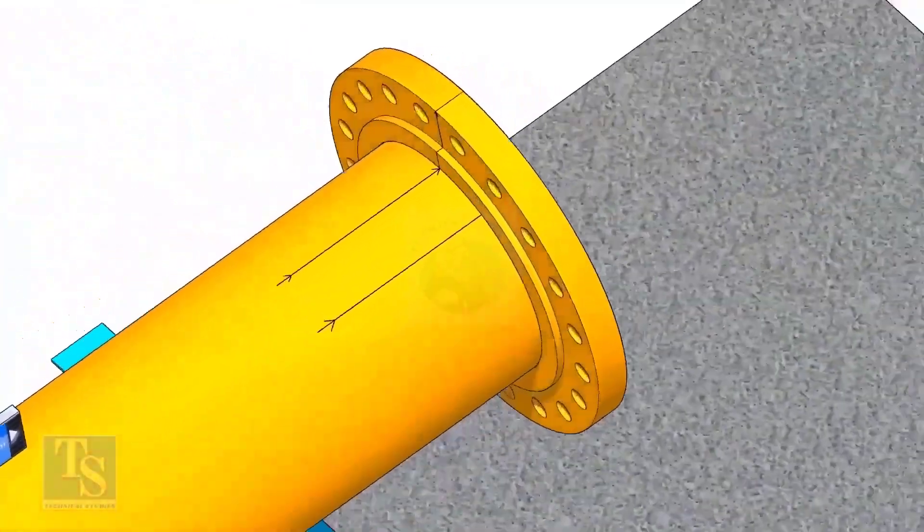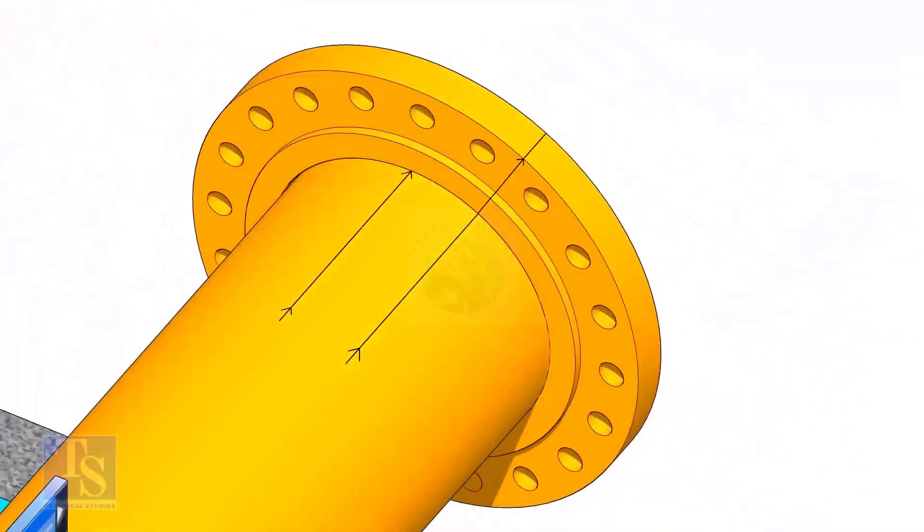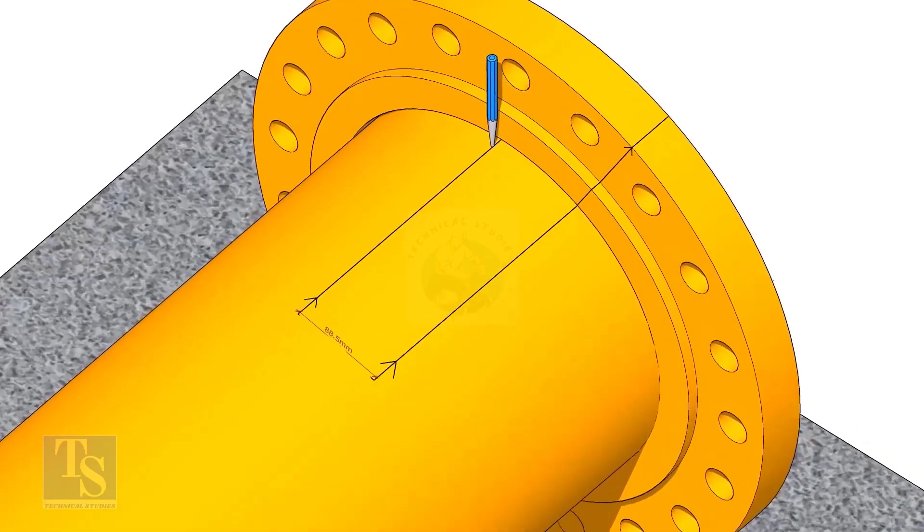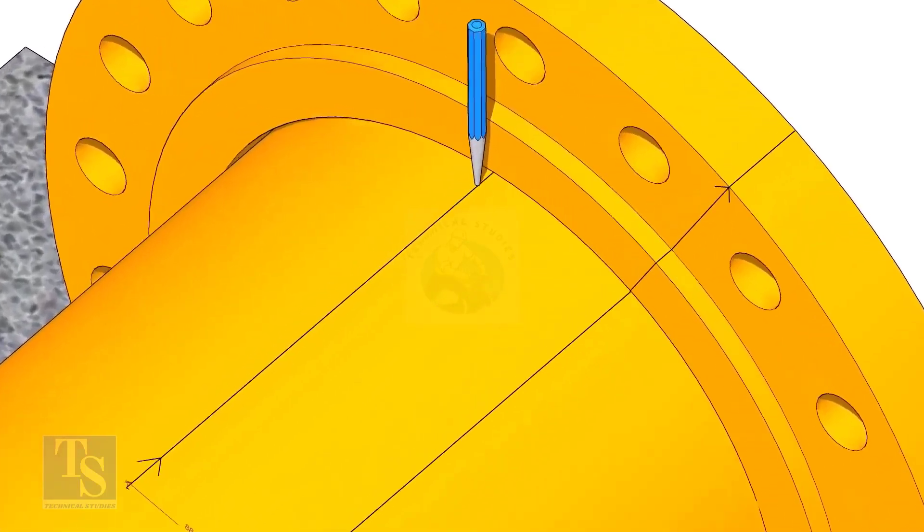Put the flange on the pipe. Rotate the flange until the center line on the flange and the 25 degree line on the pipe comes in a line. Don't forget to punch mark the center lines.